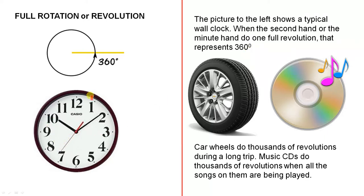So when the second hand goes all the way around, when the minute hand goes all the way around, and also when the hour hand, but that takes a lot longer, when that goes all the way around, those represent 360 degrees.